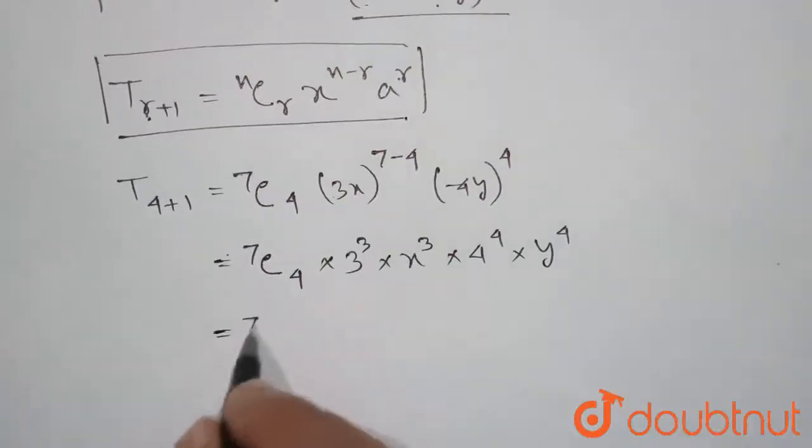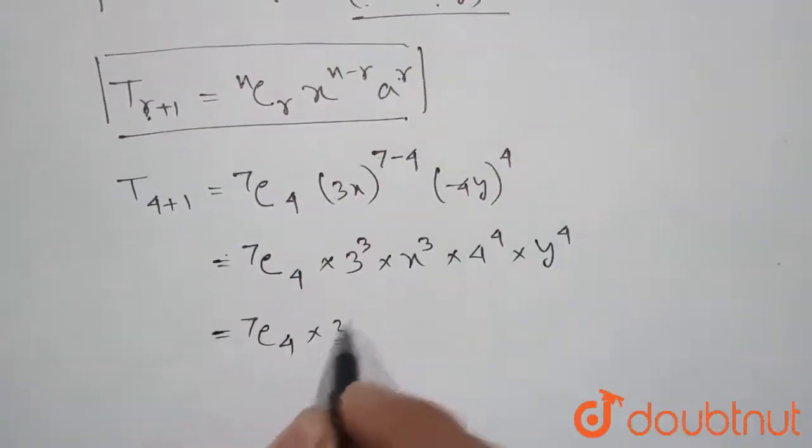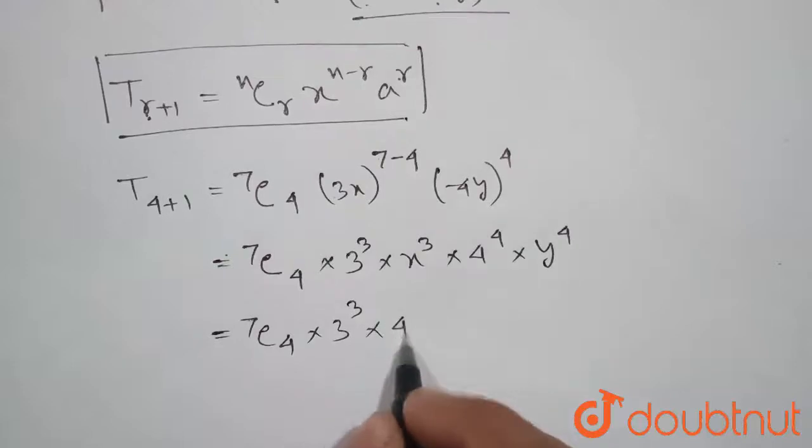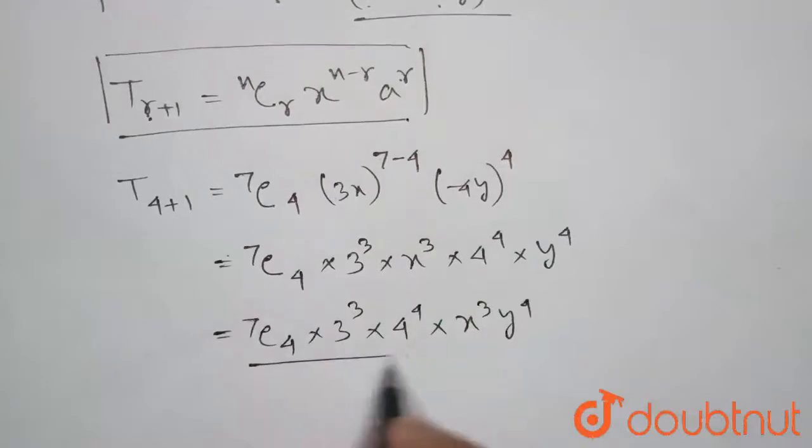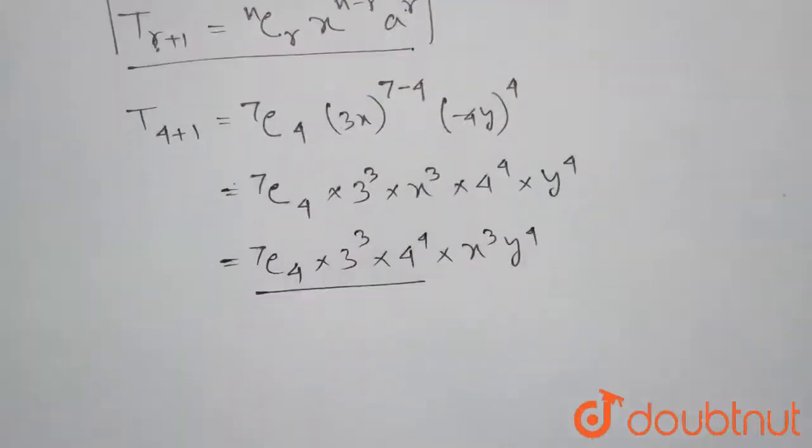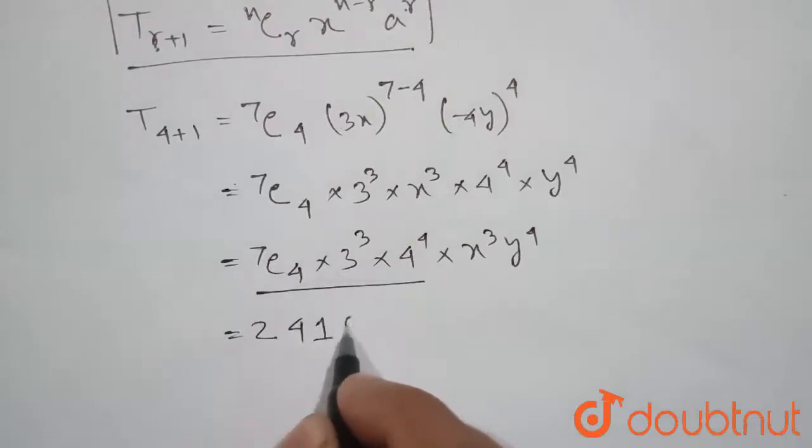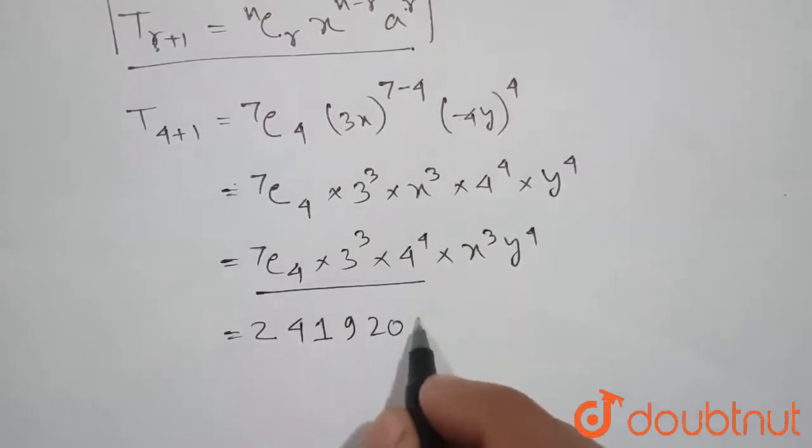So we can write 7C4 times 3 cube times 4 to the power 4 times x cube y to the power 4. So the value of this part will be 241920 and it will be x cube y to the power 4.